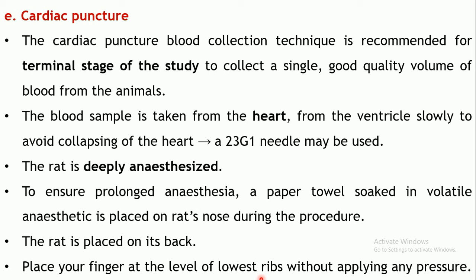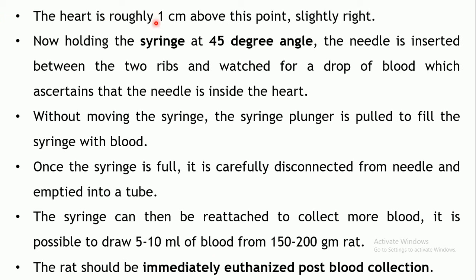After anesthesia, the rat is placed on its back. Place a finger on the lowest rib without pressure to locate it — the heart is located roughly one centimeter above this point, slightly to the right. Take a syringe, hold it at a 45-degree angle, and insert the needle between the lower ribs. A drop of blood oozing out indicates the needle is in the heart. Without moving the syringe, pull the plunger to collect blood.